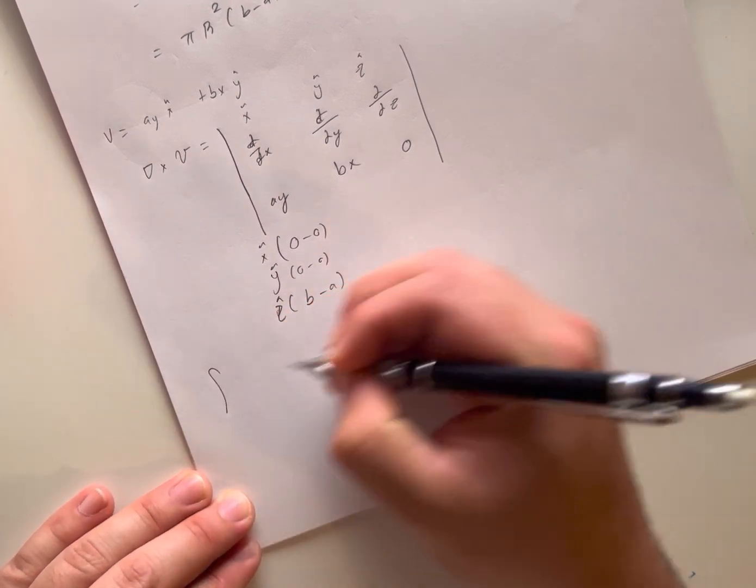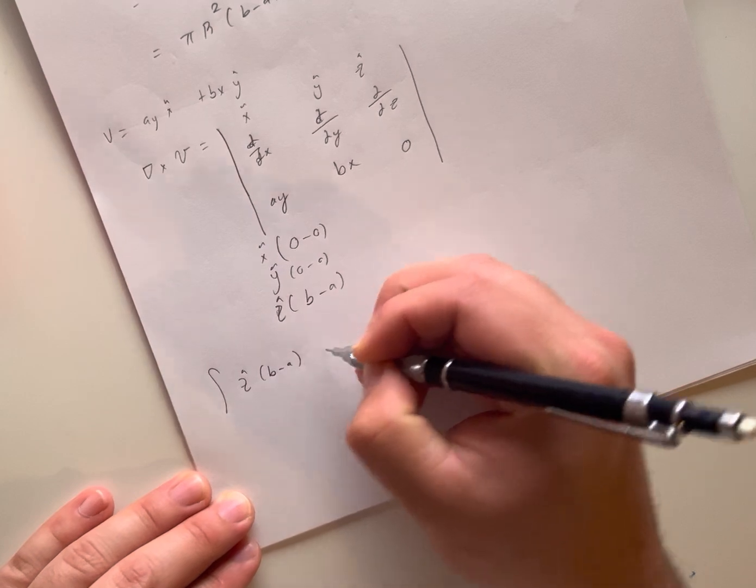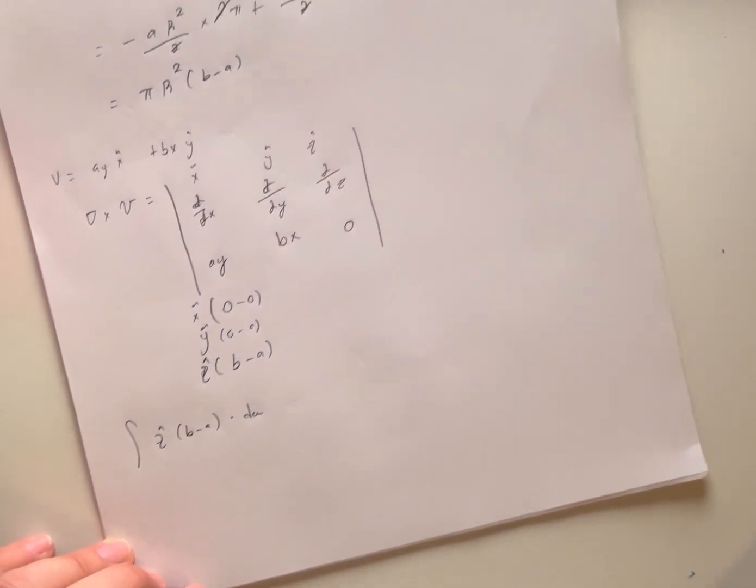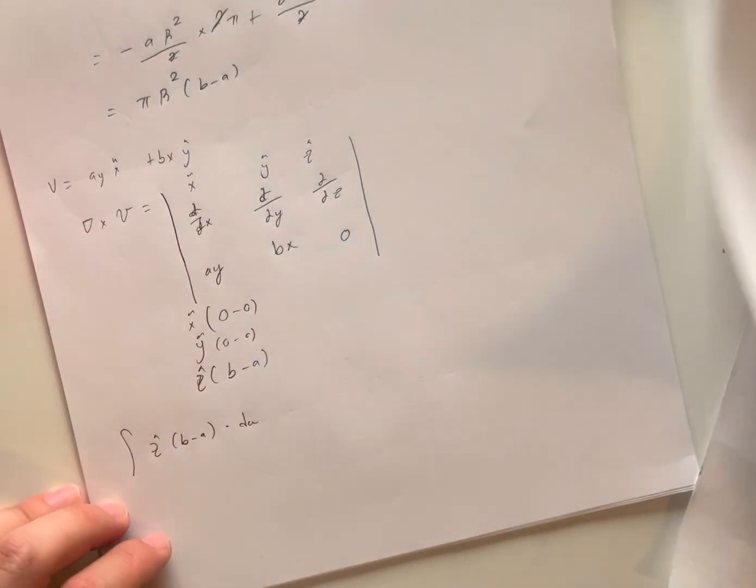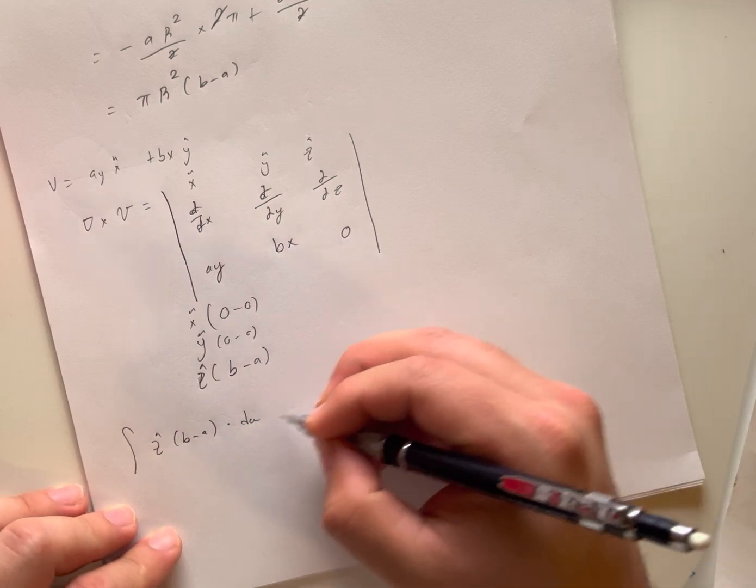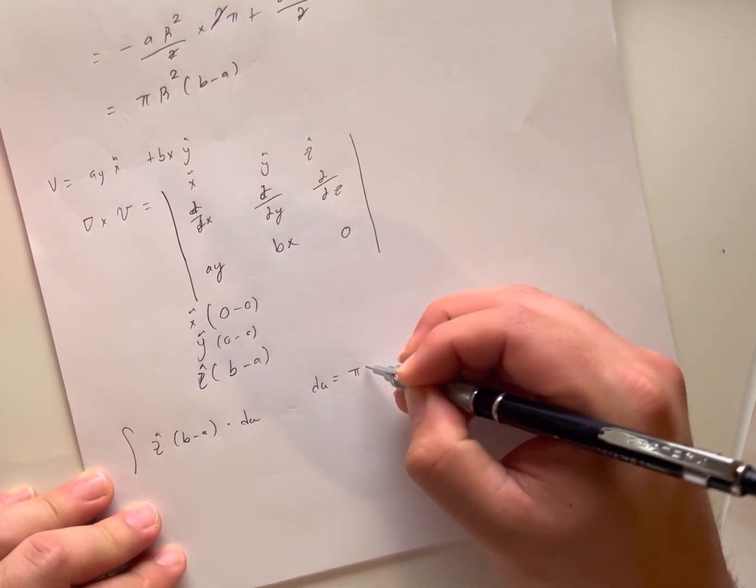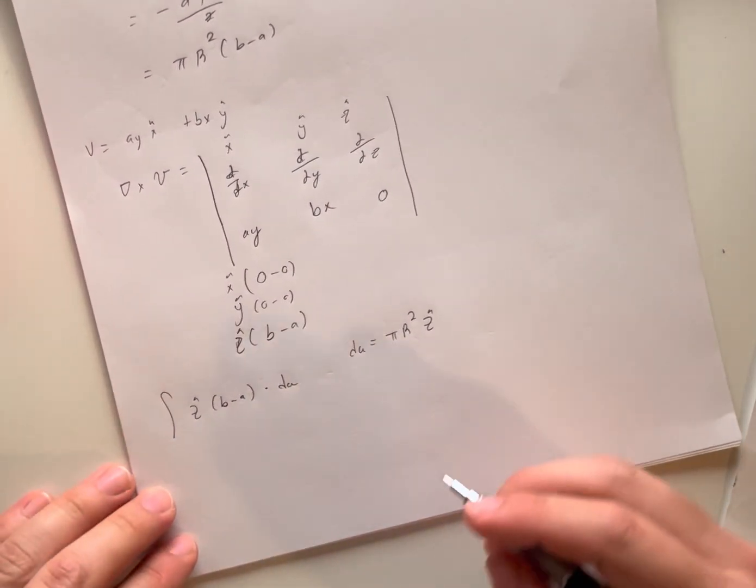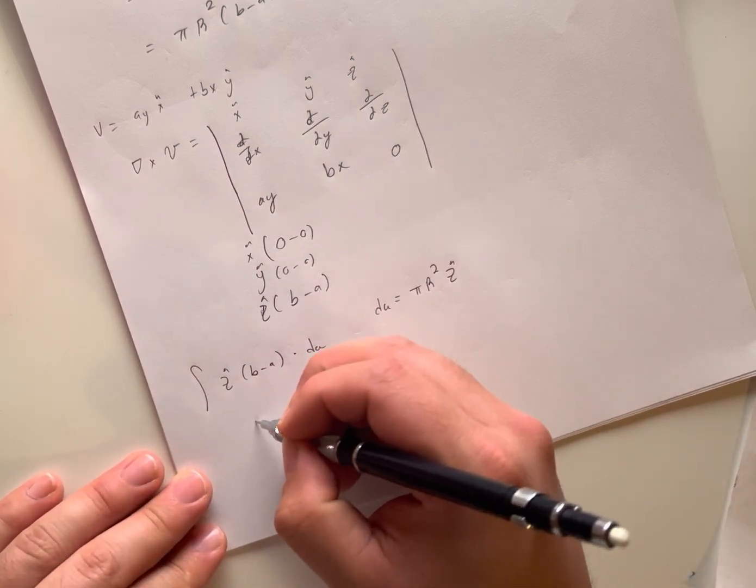We have z-hat*(b - a) dotted with d-A. Well, since we have a circular path here given to us from before with radius R centered at the origin, the area vector just becomes d-A equals pi*R^2 in the z-hat direction. Plugging all this together, we can see that this then becomes z-hat*(b - a) times pi*R^2*z-hat.